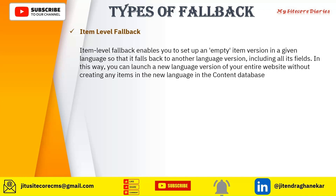Basically, let's say you have a home item. For the global English language, that is the 'en' language, and you want to set up a new website for 'en-IN'. It will have all the contents of the home page from the English language. There is no need to create any version of the English India language. If you set up a fallback for the 'en-IN' language pointing to 'en', and also enable the item level fallback, then the content will be pulled from 'en' to 'en-IN'.